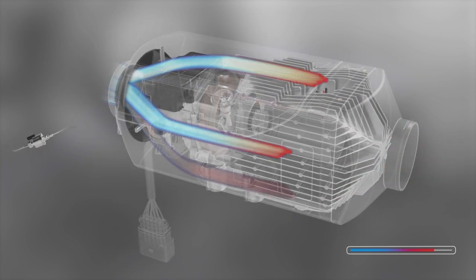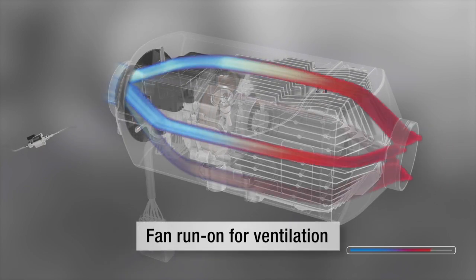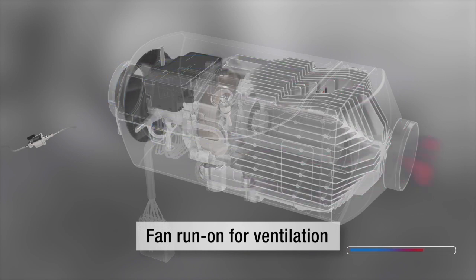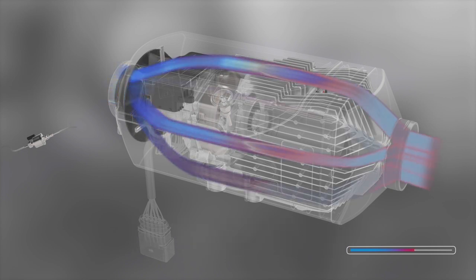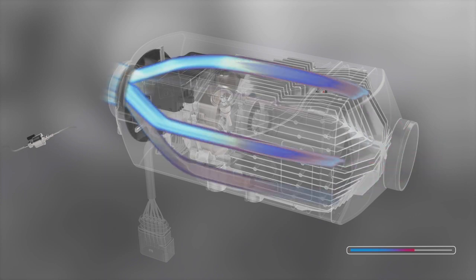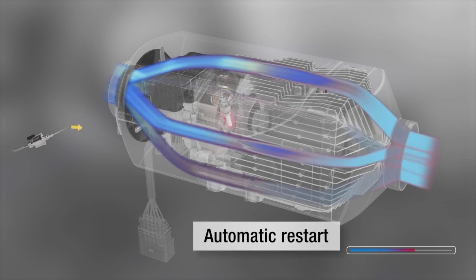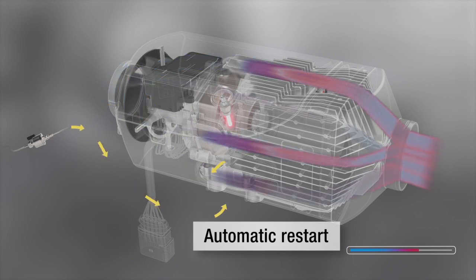The fan continues to run for a few minutes. The control unit then switches the fan to ventilate so that the interior air continues to flow around the temperature sensor. If the interior temperature falls below the specified set point, the temperature sensor detects this. The heater restarts, but this time at a lower power level.